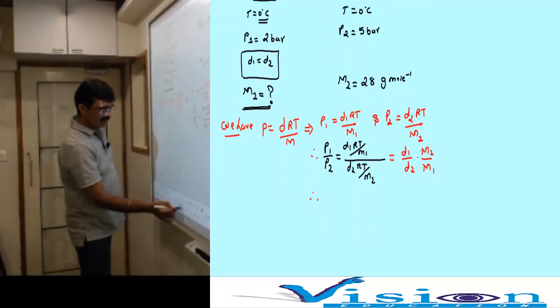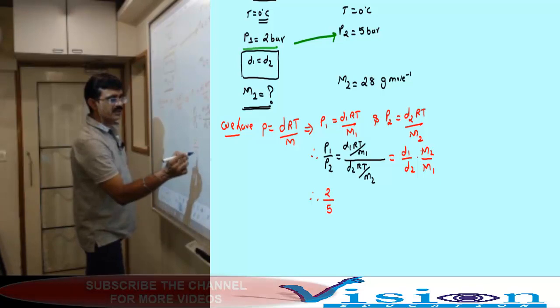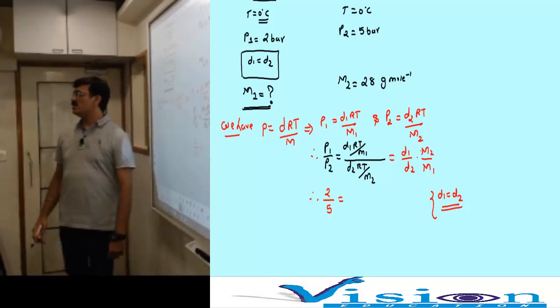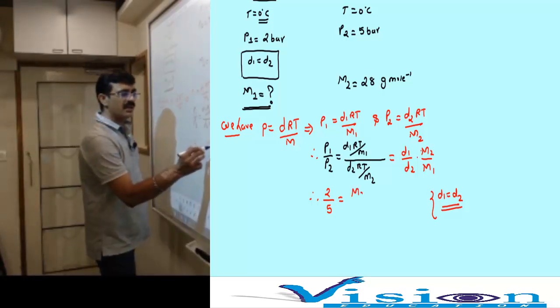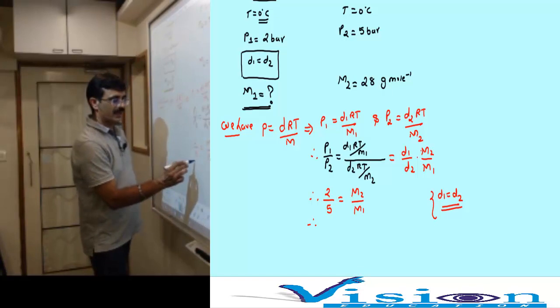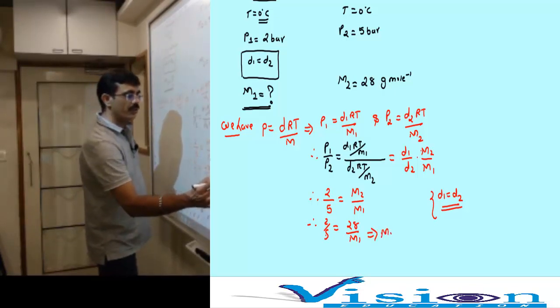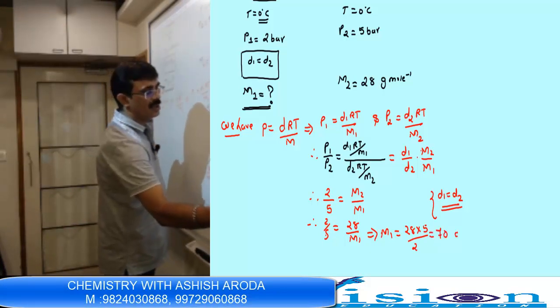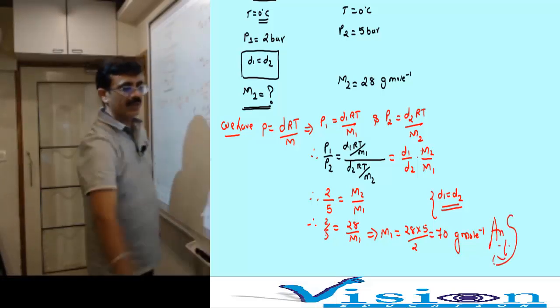We have the equation p equals d RT by m. Therefore p1 equals d1 RT by m1 and p2 equals d2 RT by m2. Dividing these: p1 by p2 equals d1 by d2 into m2 by m1. RT is common and gets cancelled.